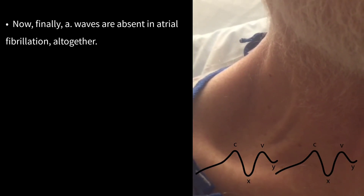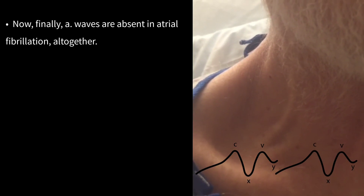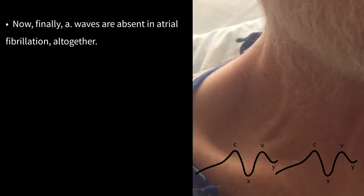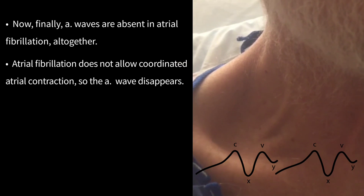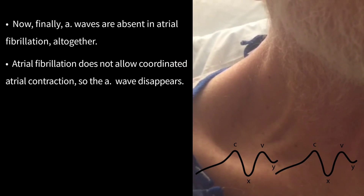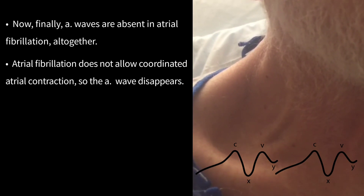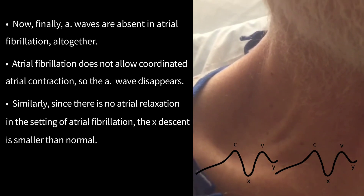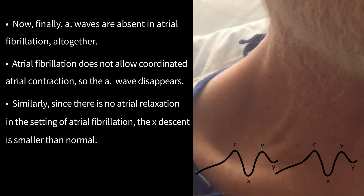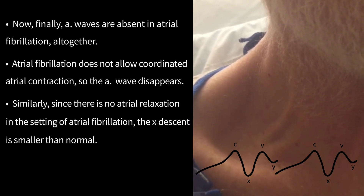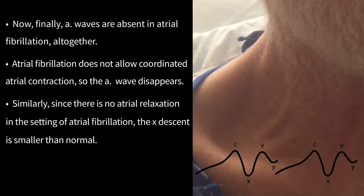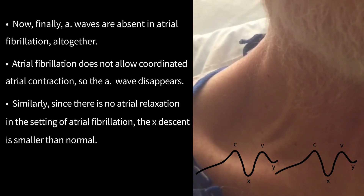A-waves are absent in atrial fibrillation altogether. Atrial fibrillation does not allow coordinated atrial contraction, so the A-wave disappears. Similarly, since there is no atrial relaxation in the setting of atrial fibrillation, the X-descent is smaller than normal.